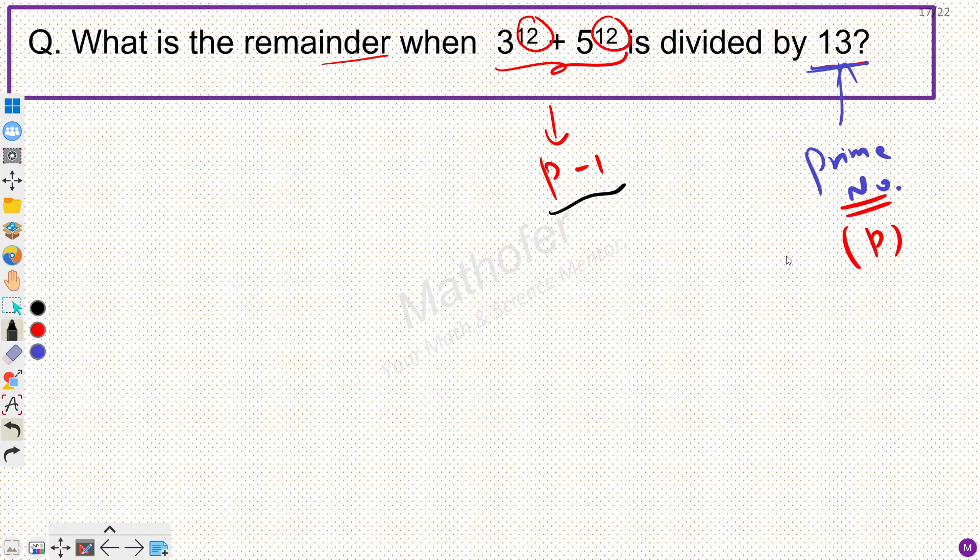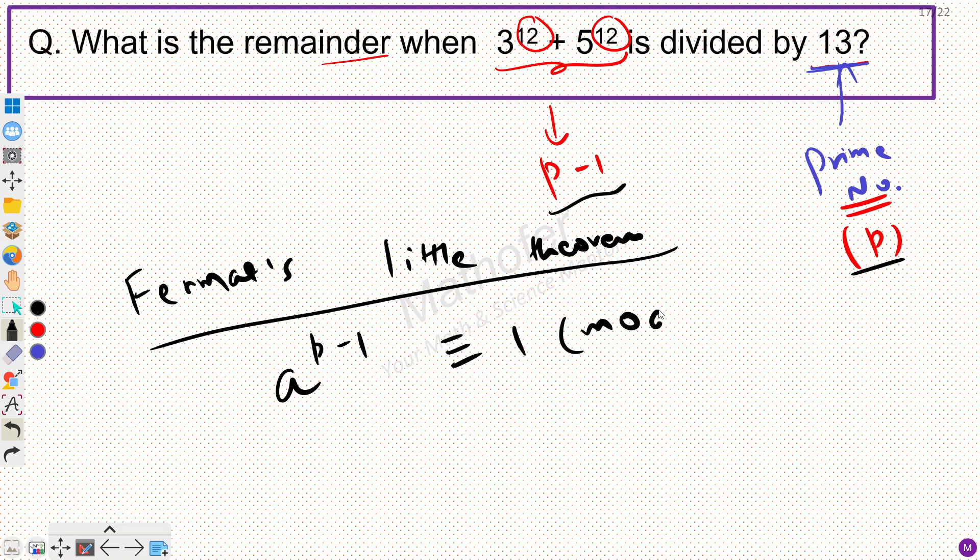Now since p minus 1 and p are in play here, the theorem that we can think of here is Fermat's Little Theorem. By looking at the question you should get a hint that we need to apply Fermat's Little Theorem. What does this say? This says that a raised power p minus 1 is congruent to 1 modulo p, where p is prime and a is a positive number which is not divisible by p.